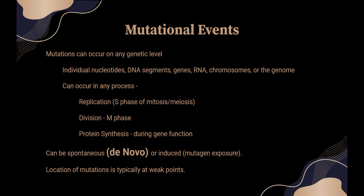Now the idea of spontaneous versus induced: a de novo mutation is something that happens for the very first time — you will not find it in a family history. This is common with autosomal dominant disorders like Marfan syndrome and achondroplasia, which are frequently caused by de novo mutations. They can be in the germline, in the somatic cells, or induced from mutagen exposure. Location of mutations is typically at weak points — sometimes it's just an error a cell makes during replication or division, and sometimes a mutagen interferes with normal replication or division of that cell material.